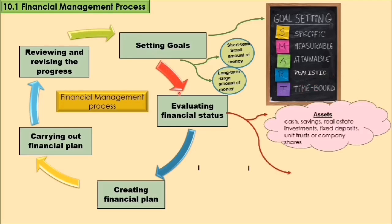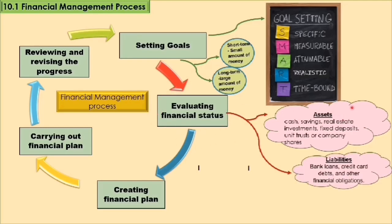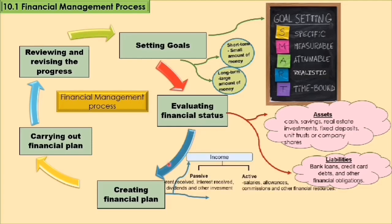After setting goals, we will evaluate our financial status. Assets and liabilities are the benchmark for evaluating our financial status. Examples of assets are cash, savings, real estate, investments, fixed deposits, unit trust, or company shares. Whereas examples of liabilities are bank loans, credit card debts, and other financial obligations.